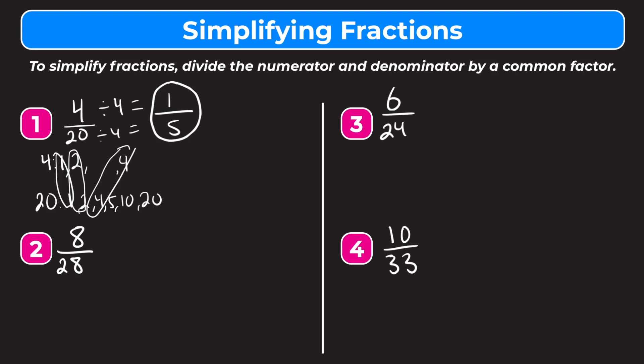Let's go on to number 2. We have 8 twenty-eighths. Listing the factors — starting with 8: we have 1 and 8, and 8 can also be divided by 2 and 4. So the factors of 8 are 1, 2, 4, and 8.